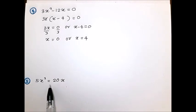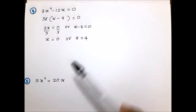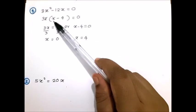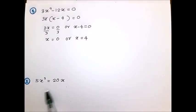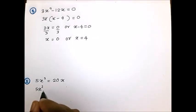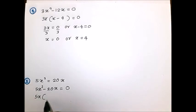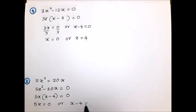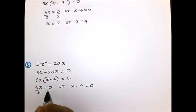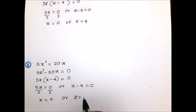Let's start the fifth example: 5x² = 20x. First, arrange one side as 0 by taking 20x to the left: 5x² - 20x = 0. Then factorize — 5x is common, giving 5x(x - 4) = 0. So 5x = 0 or x - 4 = 0. Dividing by 5 gives x = 0, and taking -4 to the right gives x = 4. The answer is x = 0 or x = 4.